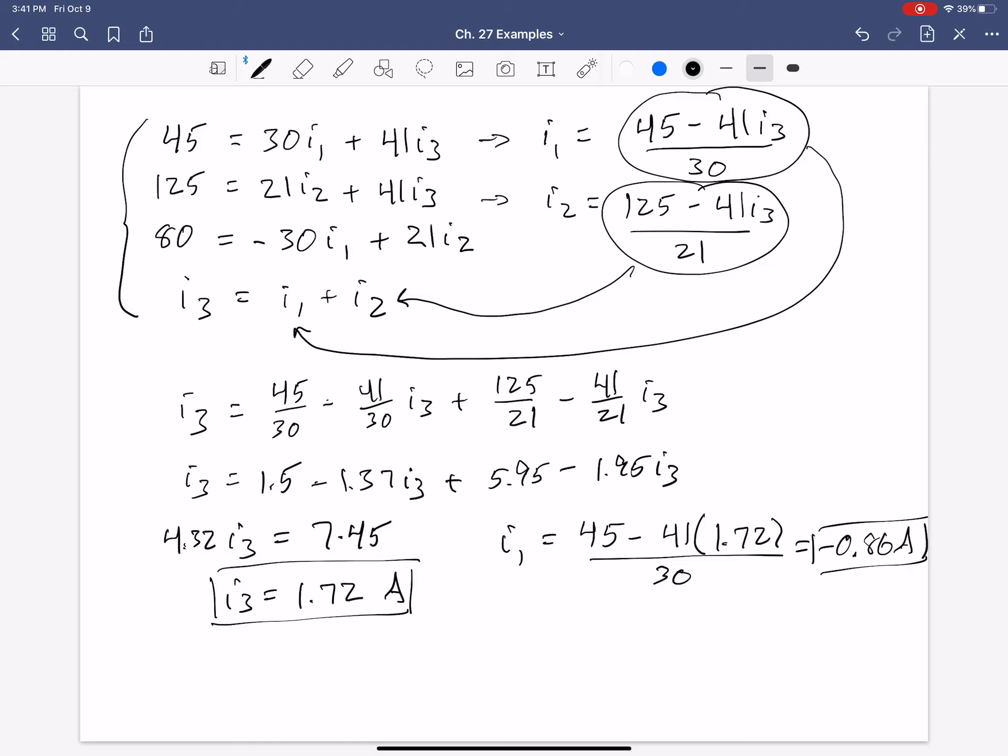Then, knowing I1, we can plug that into, say, equation 3 and solve for I2. Or, actually, I'll tell you what, we can plug that into the node equation. It's even easier right there. So, I2 is I3 minus I1. So, that's 1.72 minus negative 0.86. And that is our 2.58.